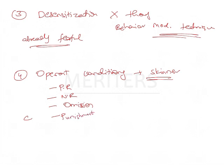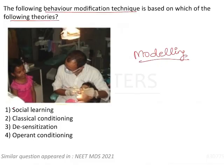Looking at all the options, social learning theory is what modeling fits into best. The child is learning from what is around him — the environment and society around him — and acquiring positive behavior. So this behavior modification technique of modeling is based on social learning theory.